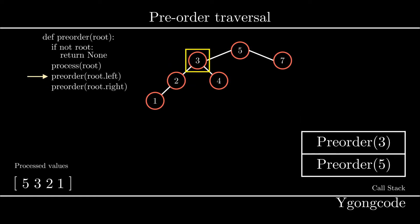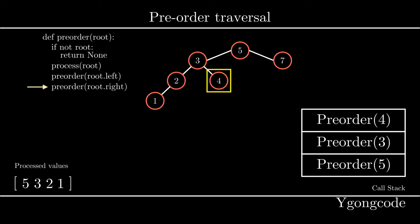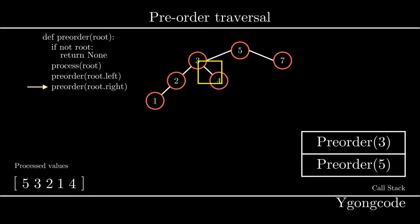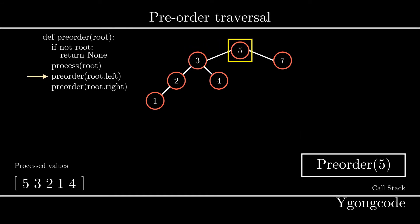At pre-order 3, we traverse the right subtree and push 4 into the stack. Since 4 has an empty left and right subtree, we know what happens with the empty subtrees, so we will skip the animation and mark 4 as done. So we pop pre-order 4 off the call stack and go back to pre-order 3.